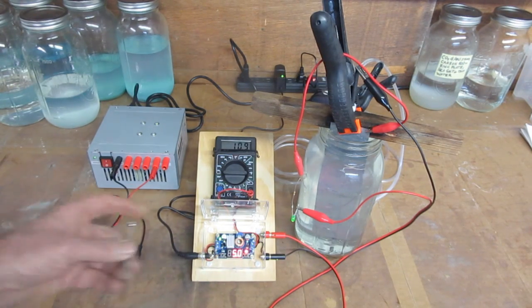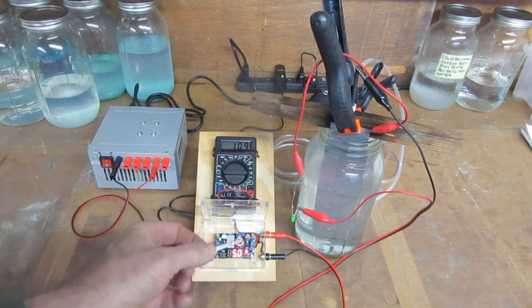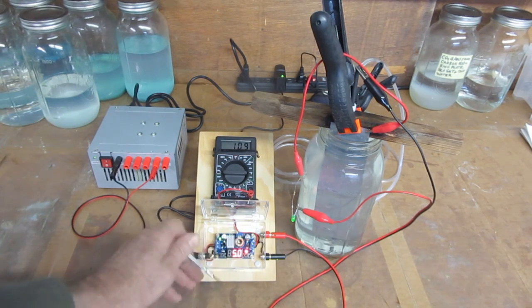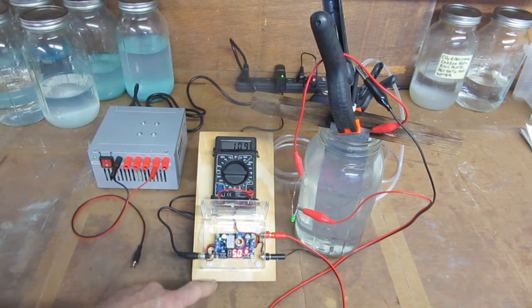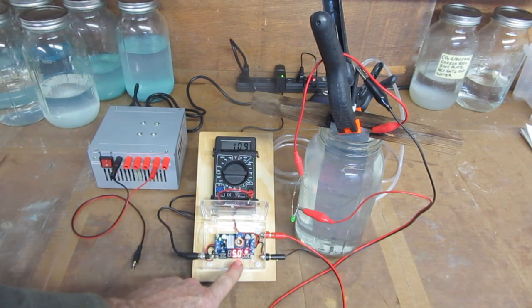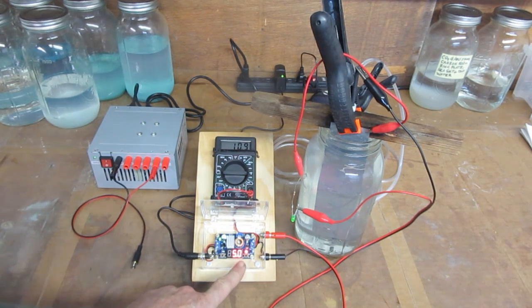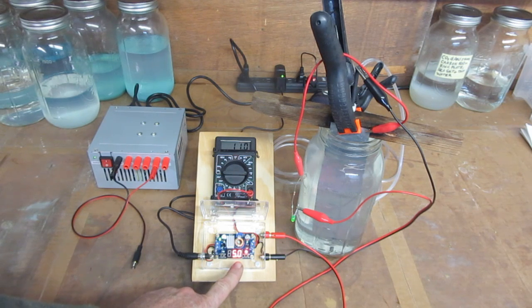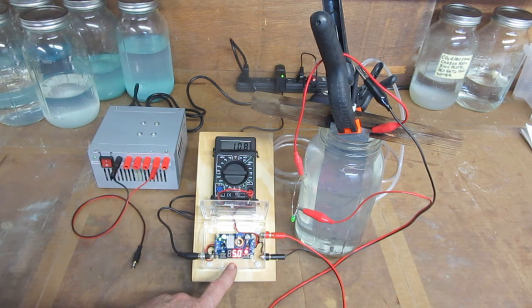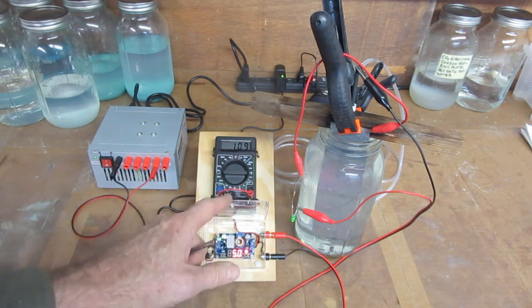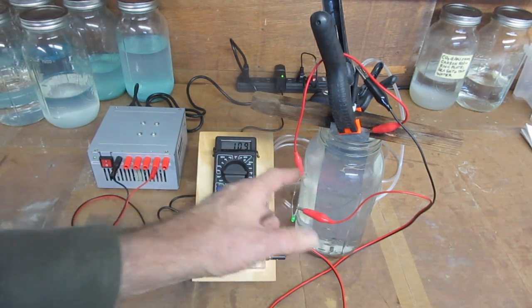You make adjustments with a small screwdriver on a trimmer pot on the circuit board. You just turn the screw to set the voltage. The reason I'm setting it to five volts is because a lot of people who make GANS use a phone charger, and phone chargers nowadays are mostly USB which all runs on five volts. That's why I set this up for five volts, to see what I could get on this test.